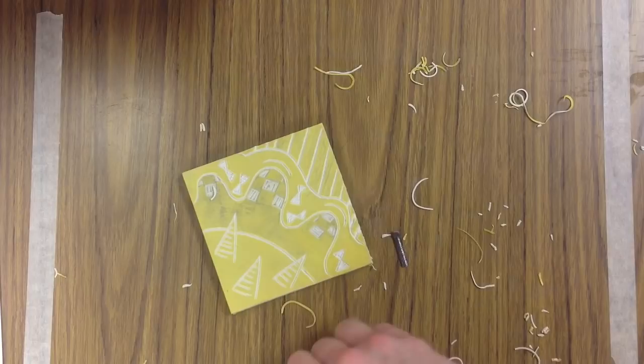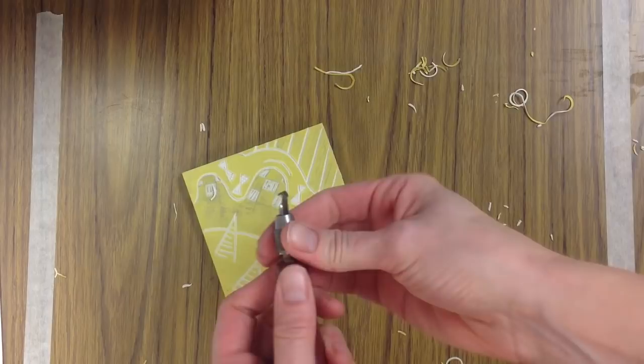So like on mine I'm going to carve these little ovals at the top and I want to make sure that I use the bigger scoop tip, number 25, to get that done.